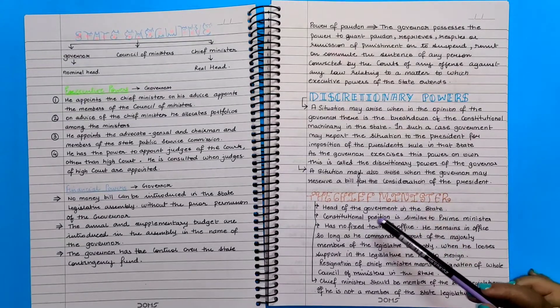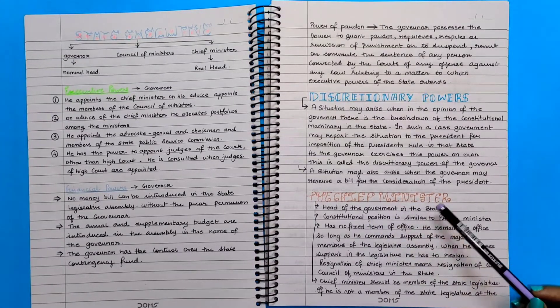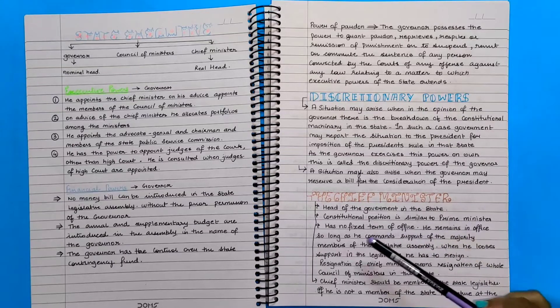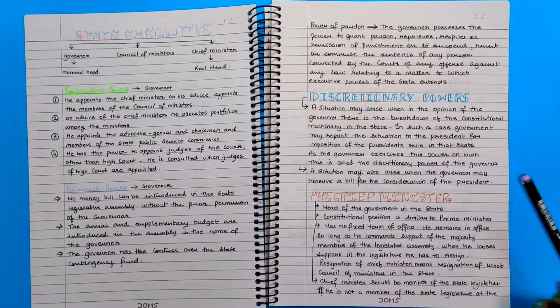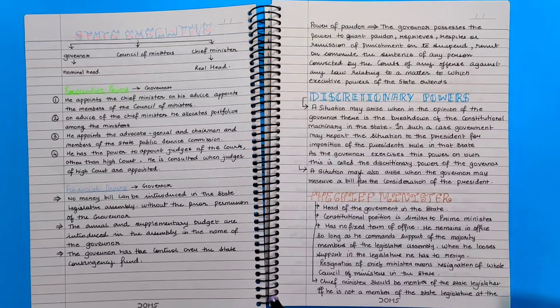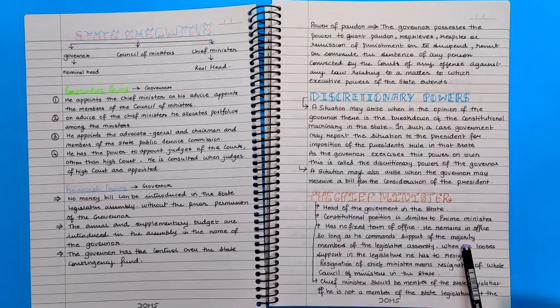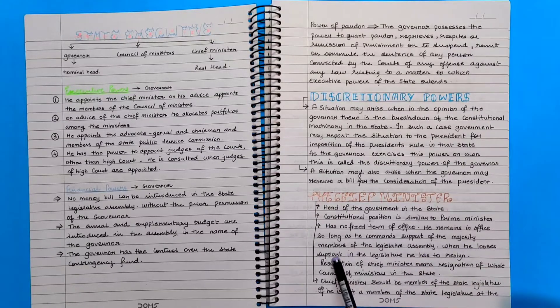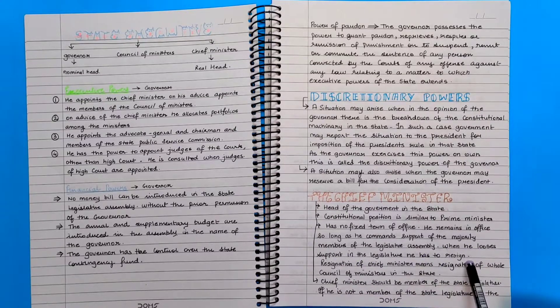The chief minister is the head of the government in the state. Constitutional position is similar to the prime minister. He has no fixed term of office because he remains in office as long as he commands the support of the majority members of the legislative assembly. And when he loses the support of the legislature, he has to resign.